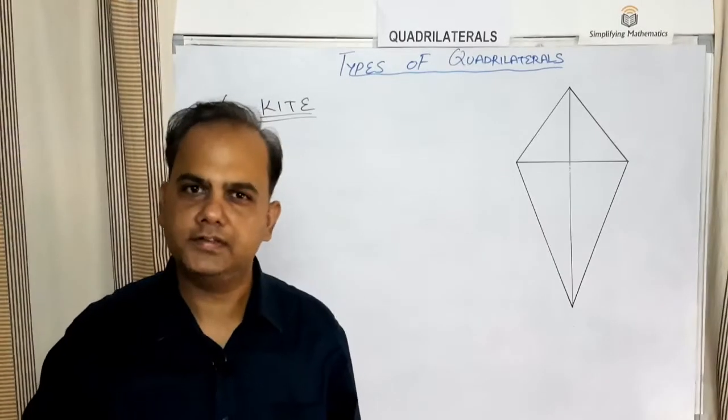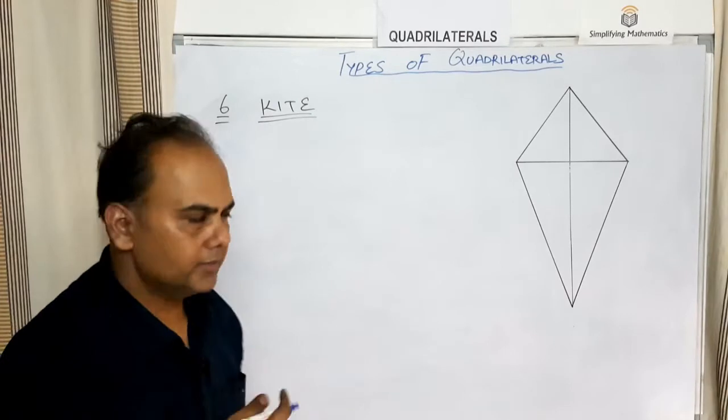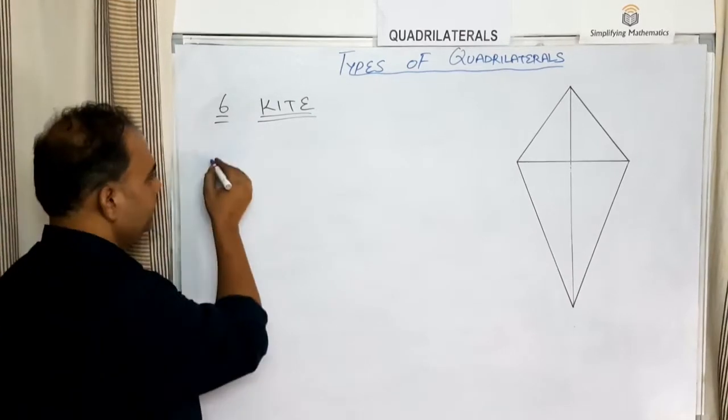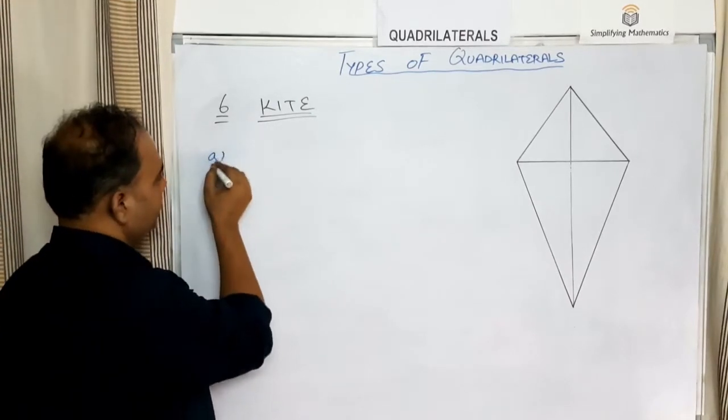If the non-parallel sides AD and BC are equal to each other, then that trapezium is called an isosceles trapezium.